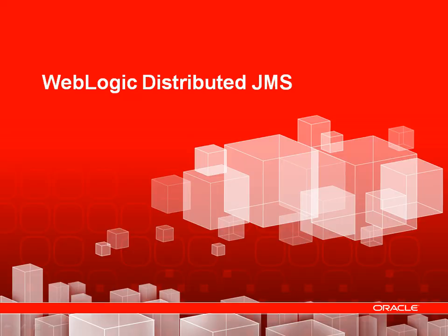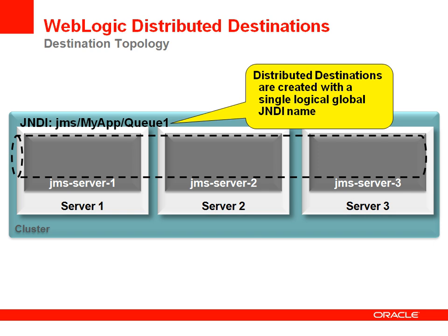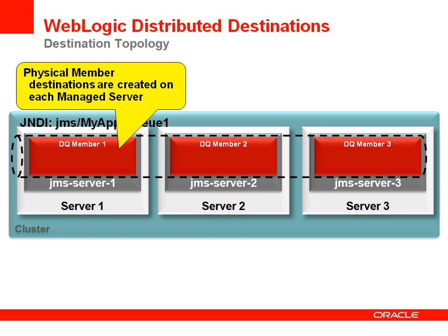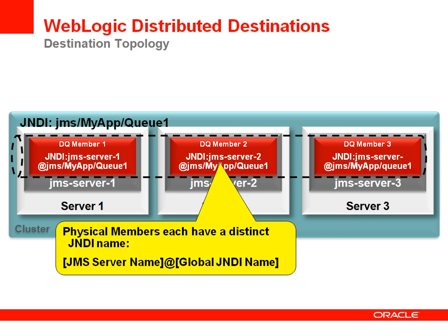Now let's take a look at how WebLogic handles the distributed JMS destinations in the context of its configuration constructs. When you create a distributed destination, you will specify a global JNDI name. Behind the scenes, WebLogic will create physical member destinations and target them to the JMS servers in your cluster. The JNDI names of the physical members will be a combination of the JMS server name and the global JNDI name specified for the distributed destination. When you are using standard Java EE, you can access the destination using the global JNDI name. When you send a message to the destination using the global JNDI name, it will be delivered to one of the member destinations.